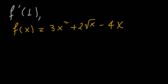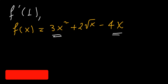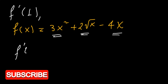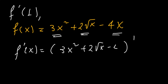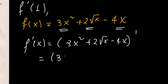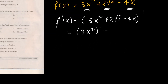So we have three types of functions. One is a quadratic form, the other is a linear form, and the third one is a square root function. f derivative at x equals the derivative of the sum of the three functions — one is 3x squared, the other is 2 times square root of x minus 4x. So first we distribute the derivative: it will be the derivative of 3x squared, plus the derivative of 2 times square root of x, minus the derivative of 4x.